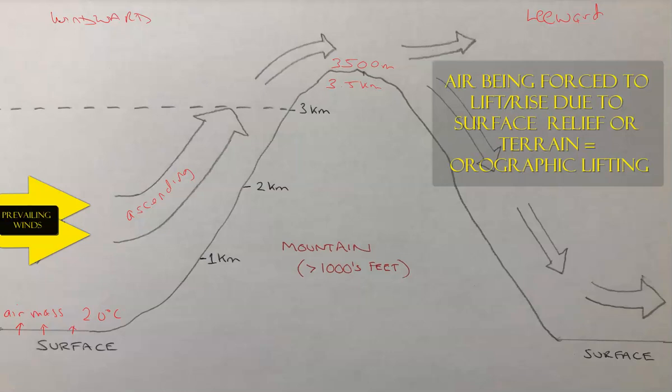We have elevations of one kilometer, two, three, up to the summit at 3.5 kilometers. As the air rises, it's going to cool down. This is called adiabatic cooling — the air has a temperature of 20 degrees Celsius, and as it rises there will be a change of pressure in that air parcel, increasing its volume and thus decreasing the internal temperature. Adiabatic cooling changes the temperature through a decrease in pressure.